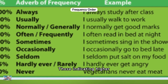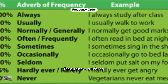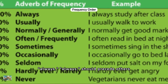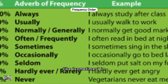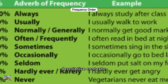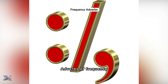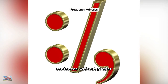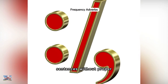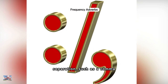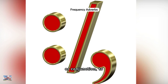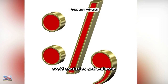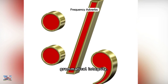Those indicating higher frequency, such as always, should precede others like sometimes in descriptive contexts. Adverbs of frequency cannot be doubled up in sentences without proper separation, such as a comma or conjunction.